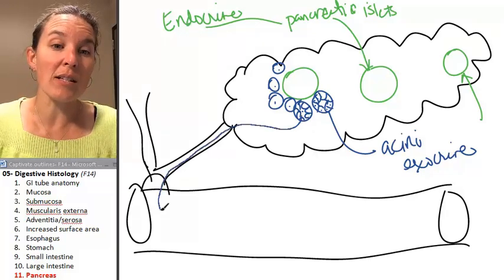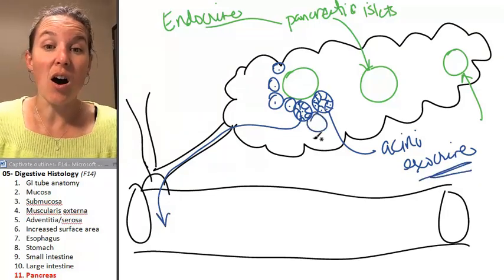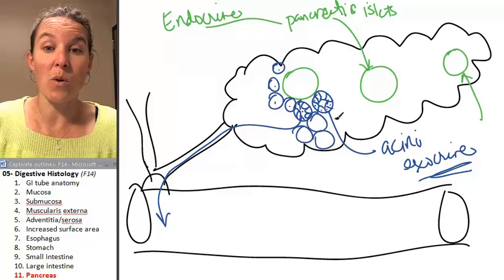So all of this stuff produced by the exocrine structures, the acini, is dumped into the duodenum.